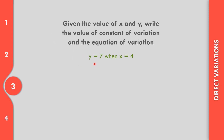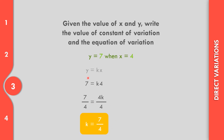How about number 3? y equals 7 when x is equal to 4. Let us replace to identify the constant of variation. The value of y is 7, and the value of x is 4, so 7 equals k times 4. Divide both sides with positive 4. Cancel 4. So k equals 7 over 4. The equation: let us replace k by 7 over 4. So y equals 7 over 4 times x, or y equals 7x over 4.